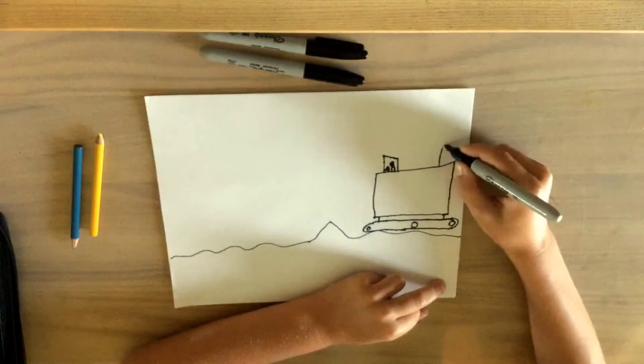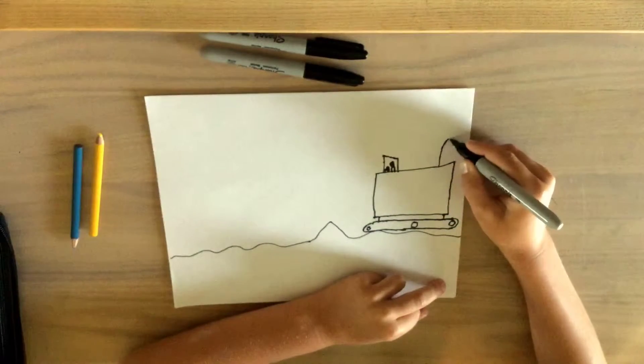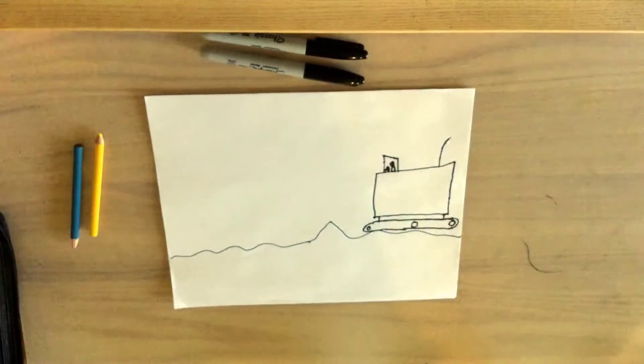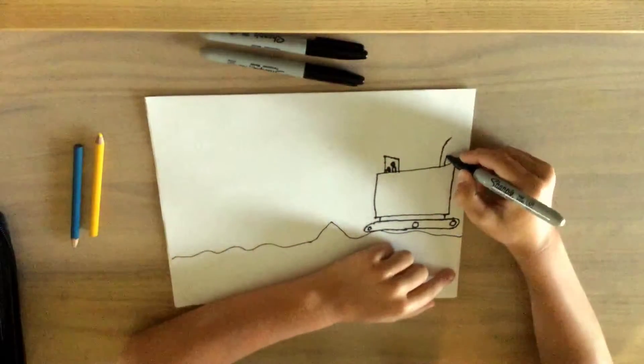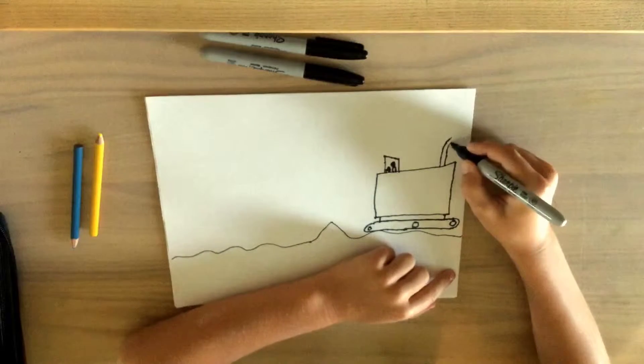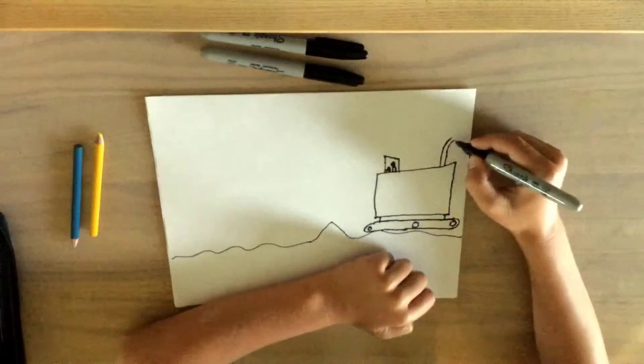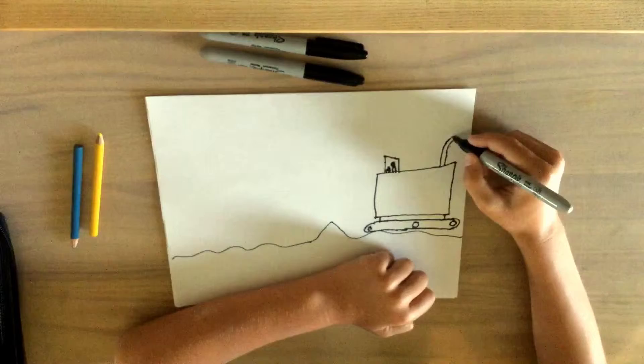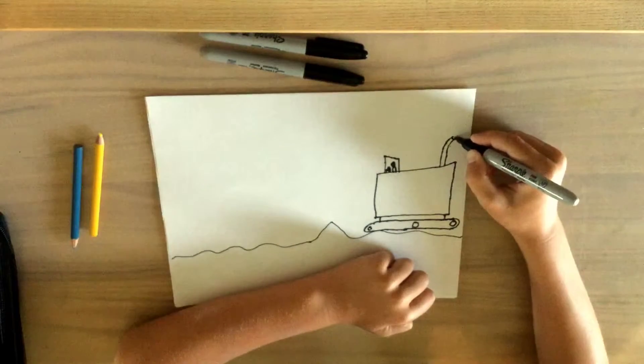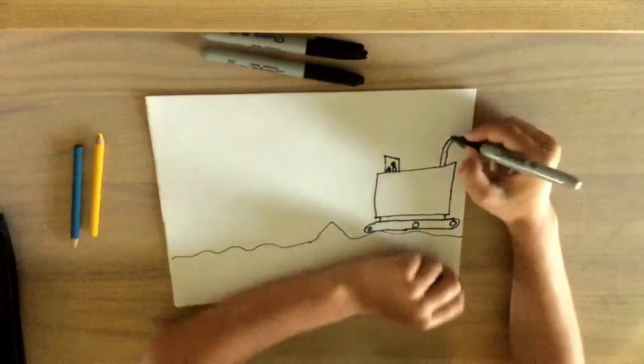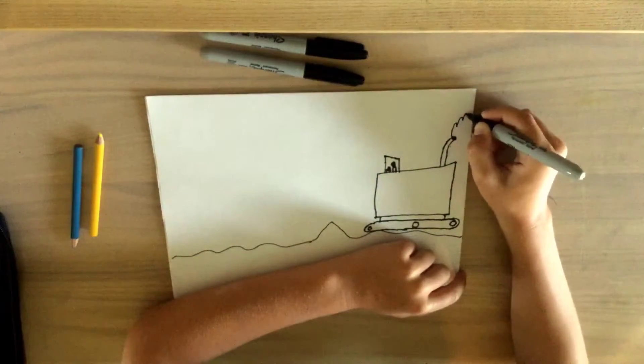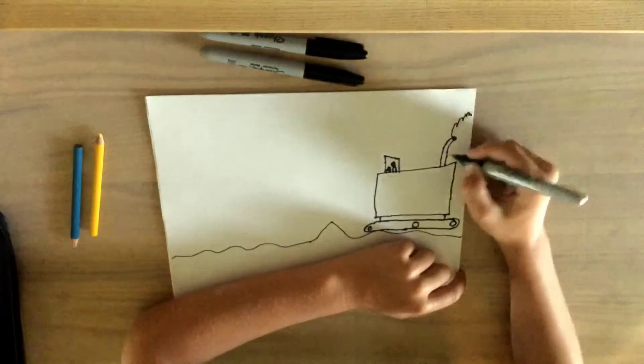Now we're going to come up and we're going to come out like this. Now we're going to bring it up and then over, and then we're going to connect those lines with a circle like that. And then on the end of that, maybe you want to draw some smoke coming out of the machine.